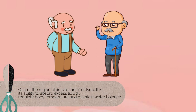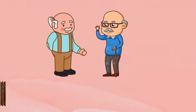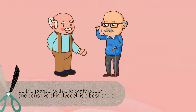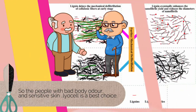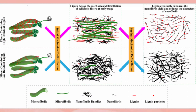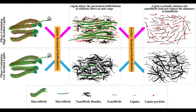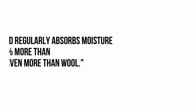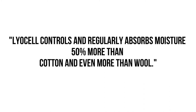One of the major claims to fame of lyocell is the ability to absorb excess liquid, regulate body temperature, and maintain water balance. So for people with bad body odor and sensitive skin, lyocell is the best choice. Nano fibrils are the key to the performance of lyocell — the nano fibrils are hydrophilic. Lyocell controls and regularly absorbs moisture 50% more than cotton and even more than wool.